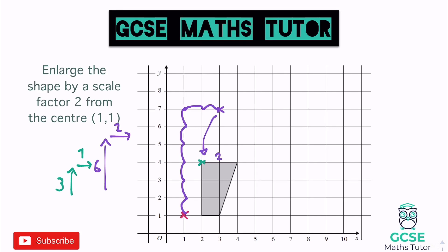At the moment the shape is two across, so twice as big means four across. It's three down, so that becomes six down — one, two, three, four, five, six. The bit at the bottom is one across, which doubles to two across. We connect those up and there we go. It might ask you to label it with a particular letter — just stick your label inside. What's important is that the vertices are in the right places.